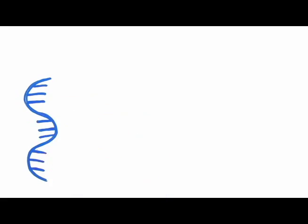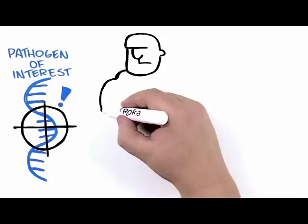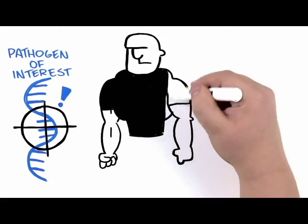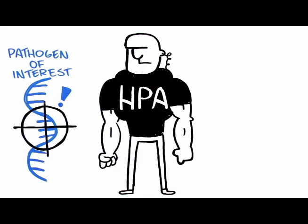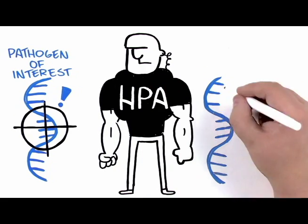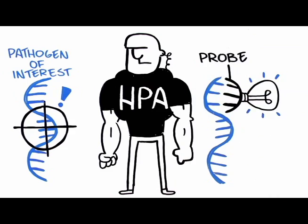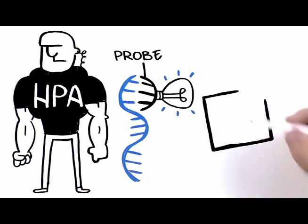Finally, the amplified target is detected through another highly specific technology, or third gate, known as HPA. Utilizing a luminescent signal attached to a highly accurate probe, the detection step offers a clear result with no interpretation needed.